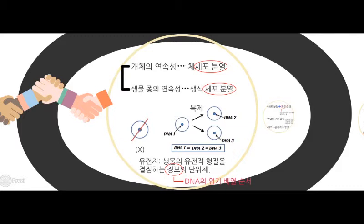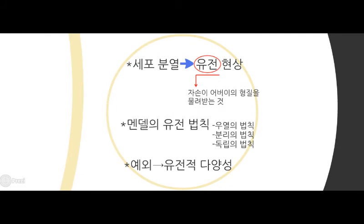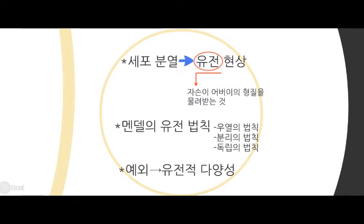따라서 이러한 세포 분열은 결국 유전현상의 일종이라고 할 수 있습니다. 하지만 어버이에서 자손으로 DNA가 전해질 때 무질서하게 유전이 일어나면 안되겠죠. 따라서 우리는 멘델의 유전법칙에 대해서 배울 것입니다. 하지만 이 법칙이 언제나 들어맞는 것은 아니고 현실에서는 예외가 생기기 마련이죠. 바로 이러한 예외 덕분에 우리 생물종의 유전적 다양성이 보장이 되는 것입니다.